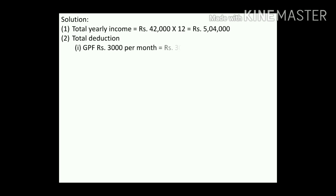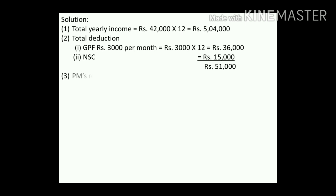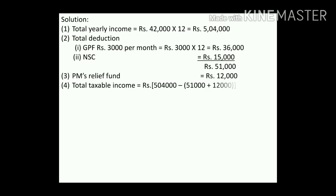GPF: rupees 3,000 per month = 3,000 × 12 = rupees 36,000. NSC = rupees 15,000. Total of GPF and NSC = rupees 51,000. PM's Relief Fund = rupees 12,000. Total deductions = 51,000 + 12,000 = 63,000. Total taxable income = 5,04,000 − 63,000 = rupees 4,41,000.